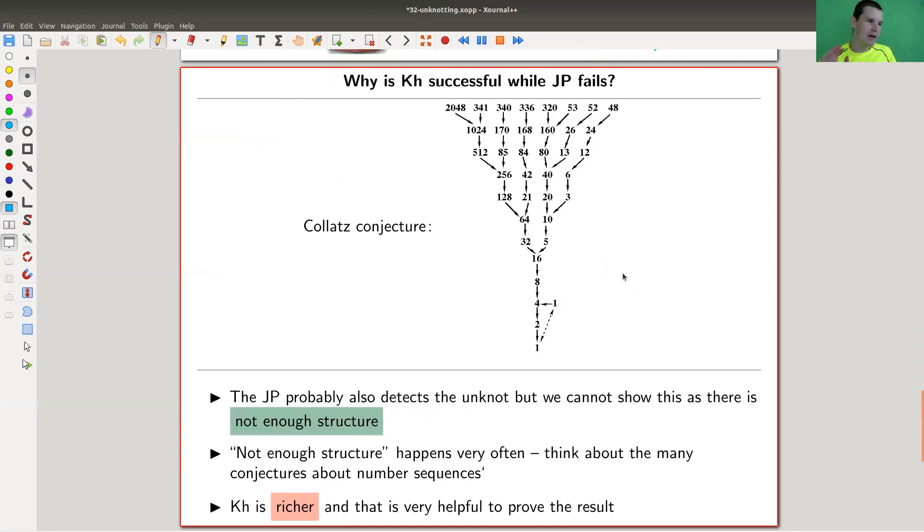The question is, why does the Jones polynomial fail where Khovanov homology is successful? That's a bit hard to explain. It's more like philosophy of mathematics, if you want.